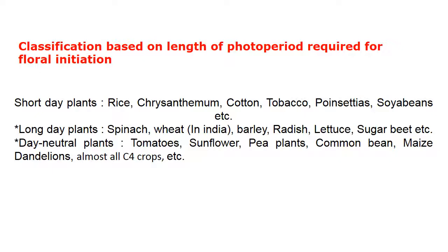Day-neutral plants are a third kind of classification. Day-neutral plants can be grown throughout the year irrespective of season, for example Tomatoes, Sunflower, Pea, Common Bean, and Maize. Almost all C4 plants are day-neutral plants.